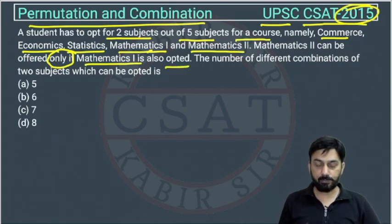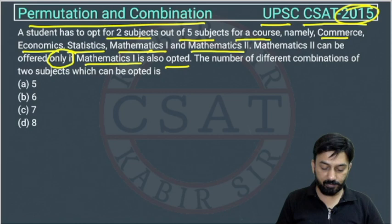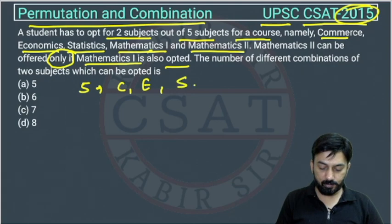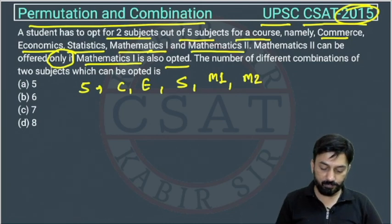Mathematics II can be offered only if Mathematics I is also opted. So there are five subjects: Commerce, Economics, Statistics, Mathematics one and Mathematics two. Out of these five, he has to choose two subjects.